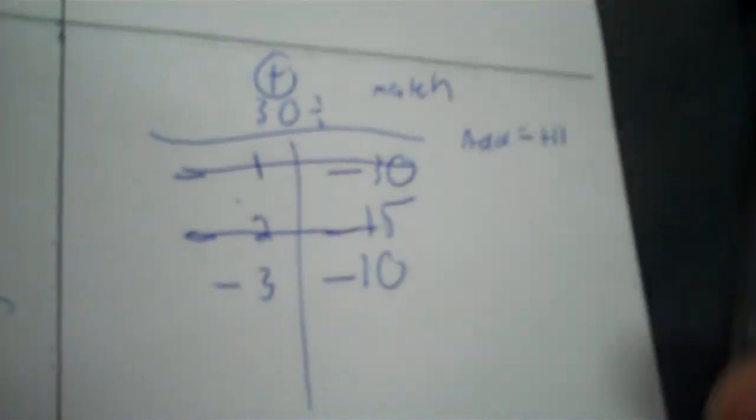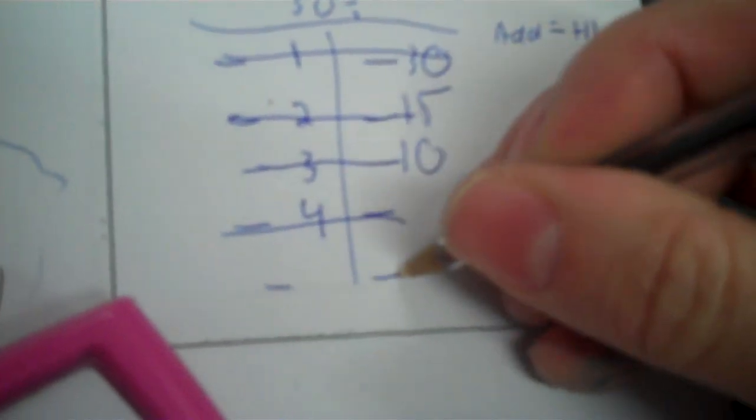30 divided by 3 is 10. Negative 3 plus negative 10 is negative 13. 30 divided by 4, I got a decimal, so I cross that out. 30 divided by 5 is 6.